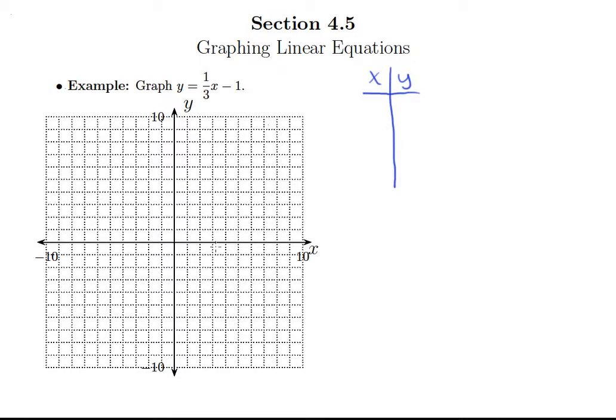So let's start just dead center because picking x equals zero is often one of the easiest points to find. So I'll pick x equals zero and we'll figure out what that equals. Well, one third times zero minus one just equals negative one. So that means that zero, negative one is a point on this line and so I'll go to zero and then down negative one.